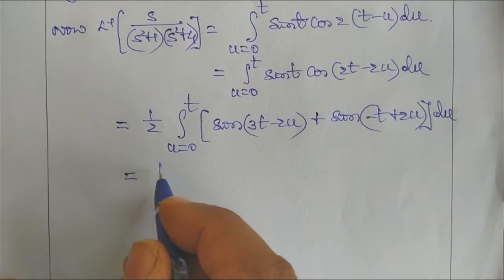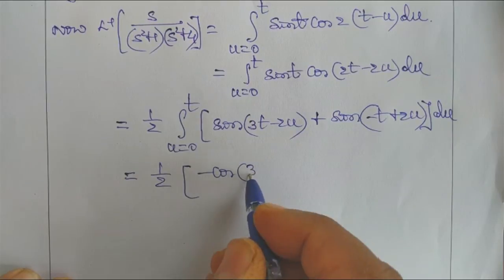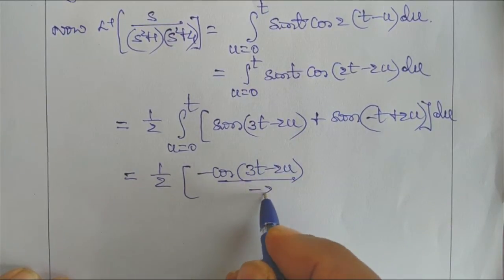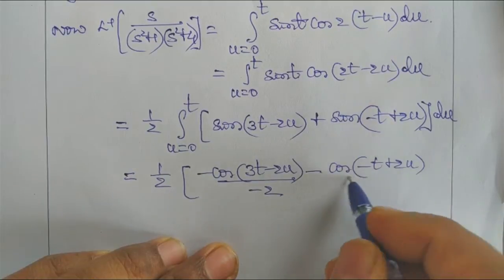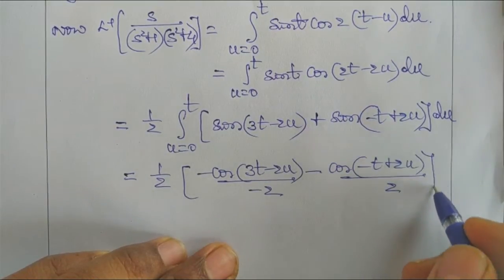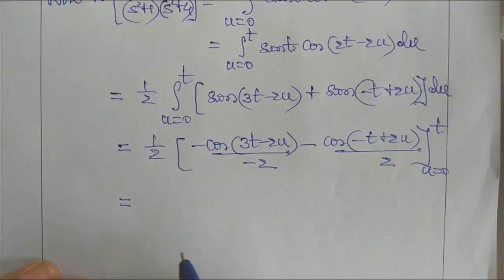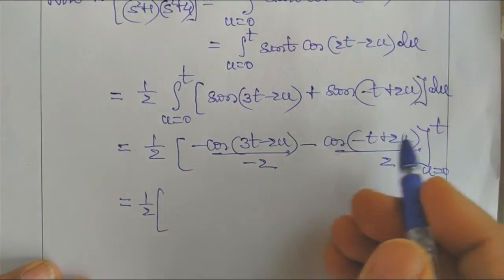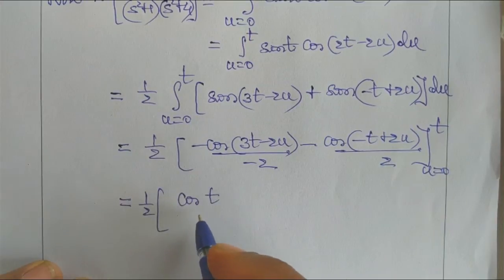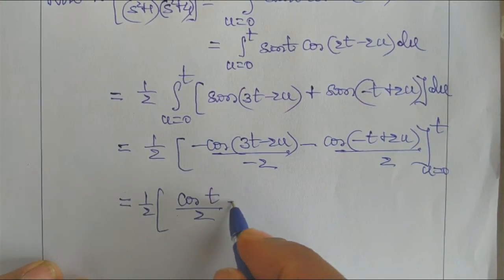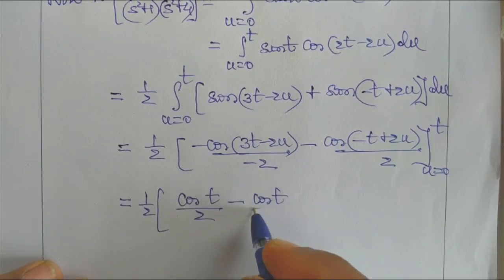Integrating: ½ · [−cos(3T − 2U)/(−2) − cos(−T + 2U)/2] from U = 0 to T. Substituting the upper limit U = T: 3T − 2T = T and −T + 2T = T, giving −cos(T)/2 and −cos(T)/2 respectively for each term after applying the signs.